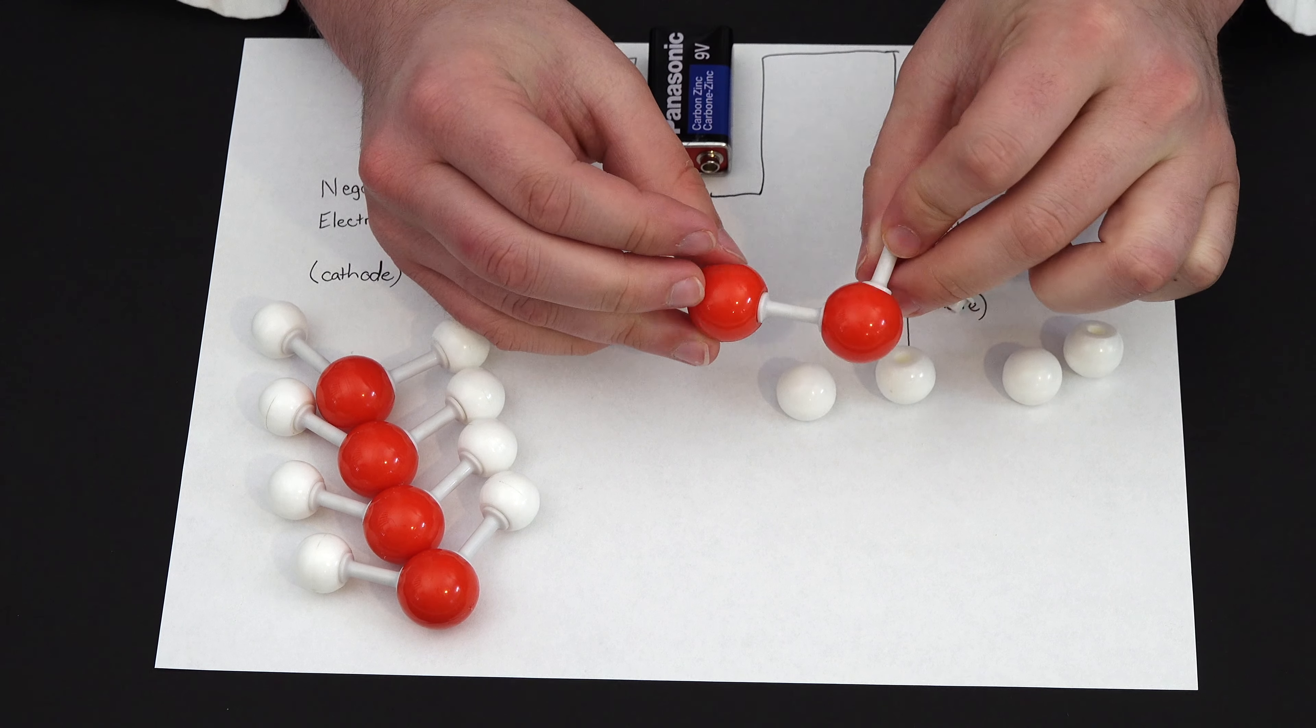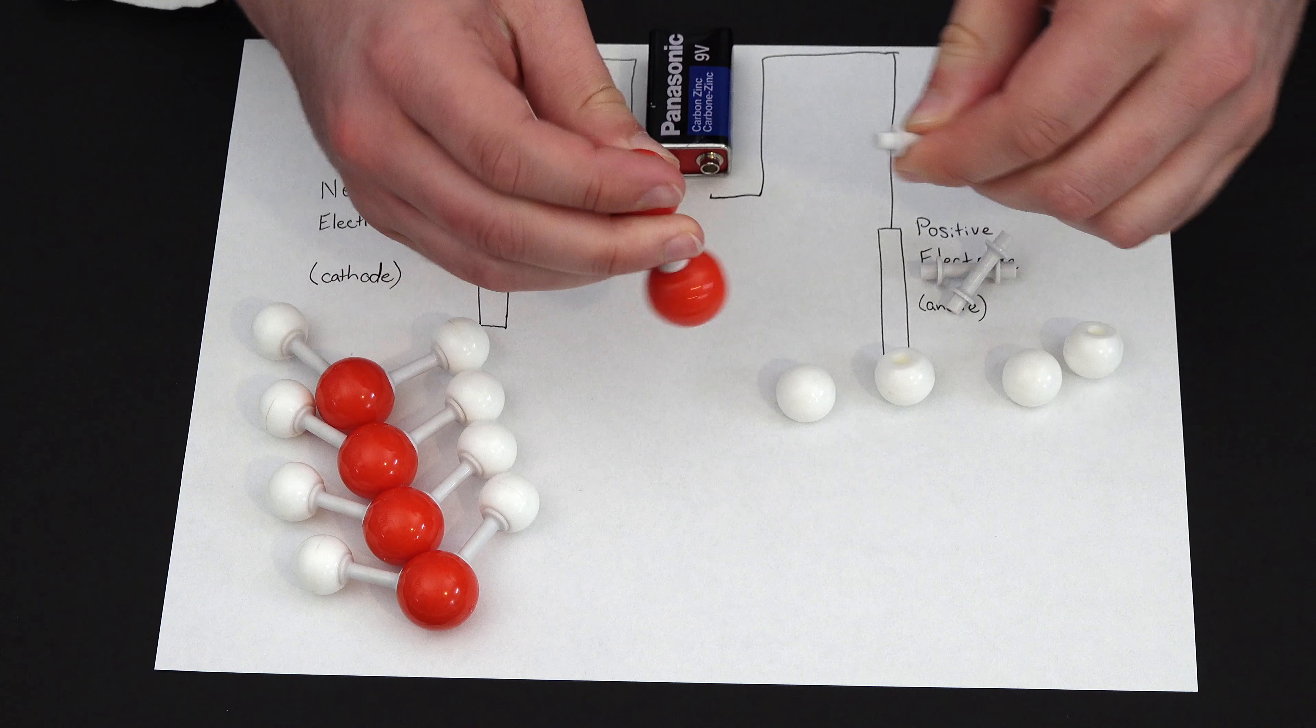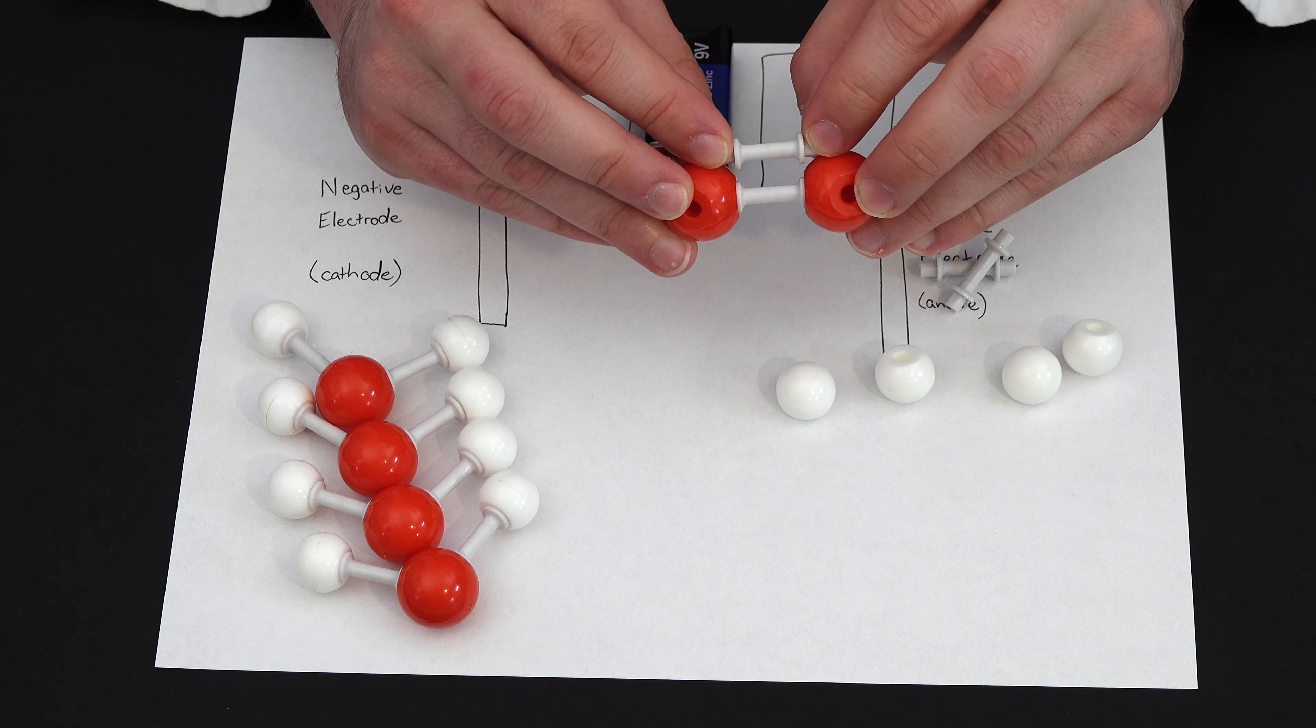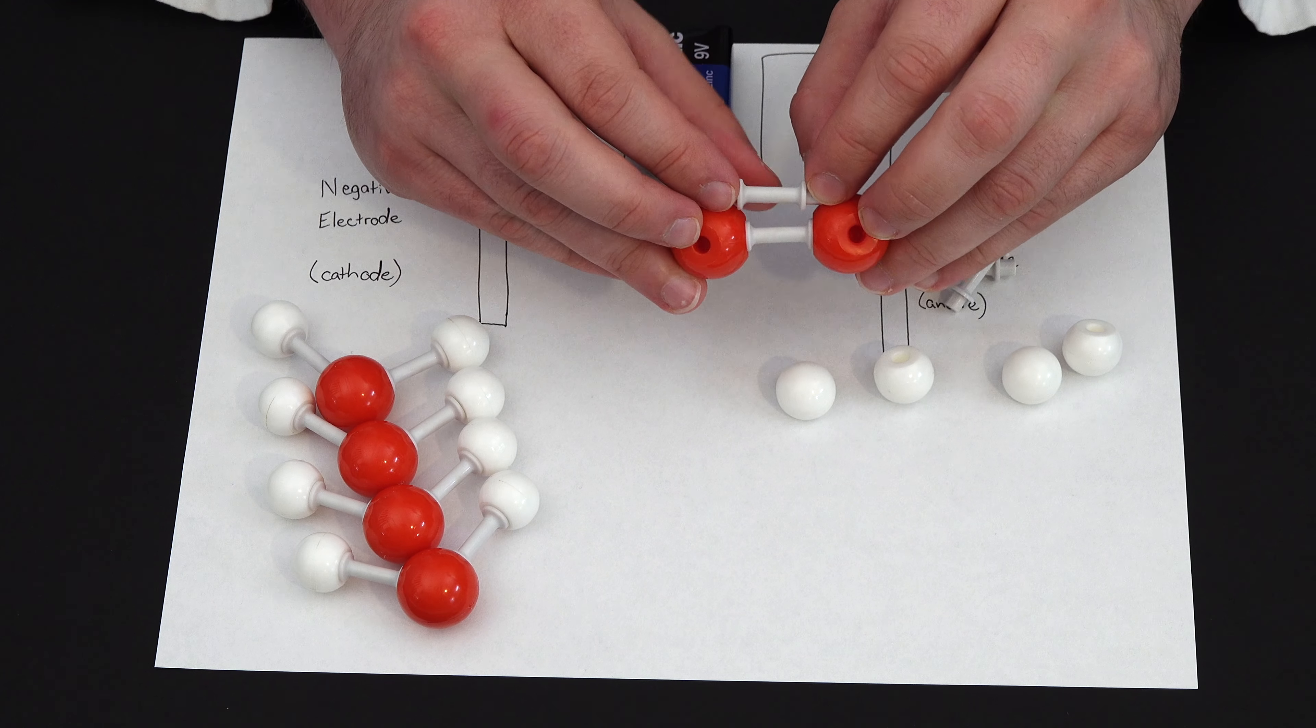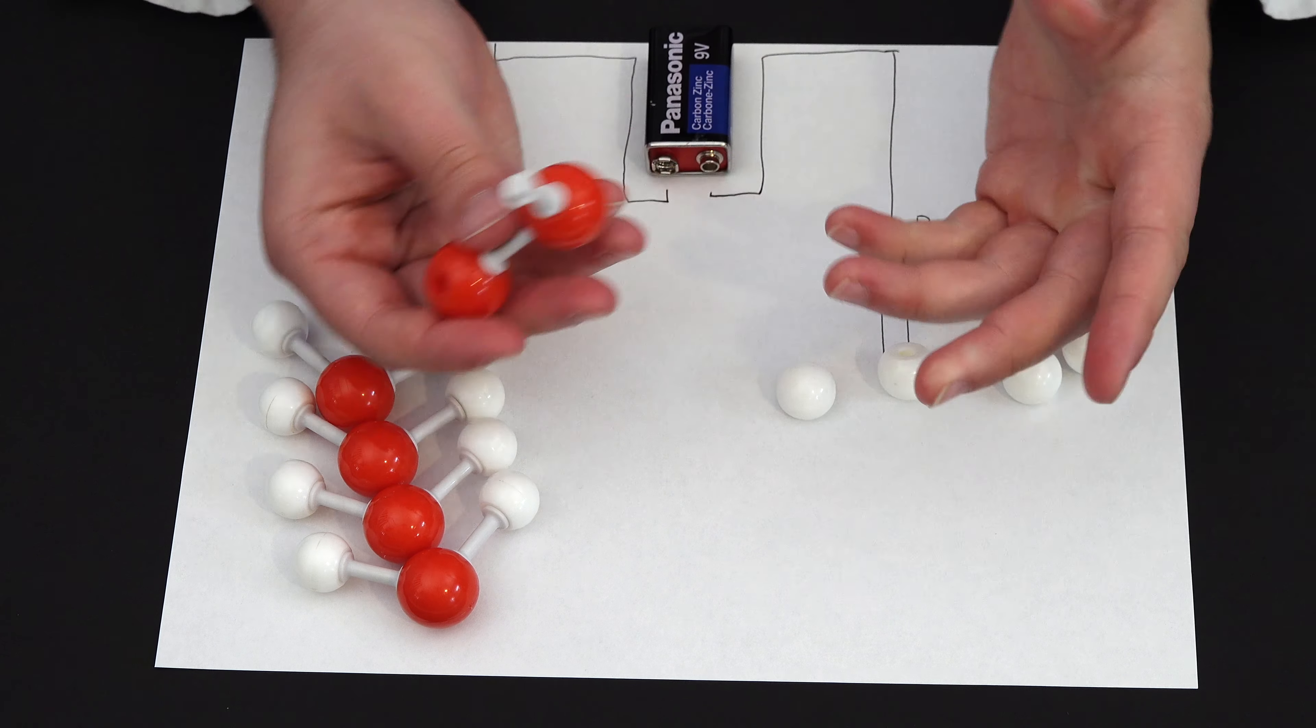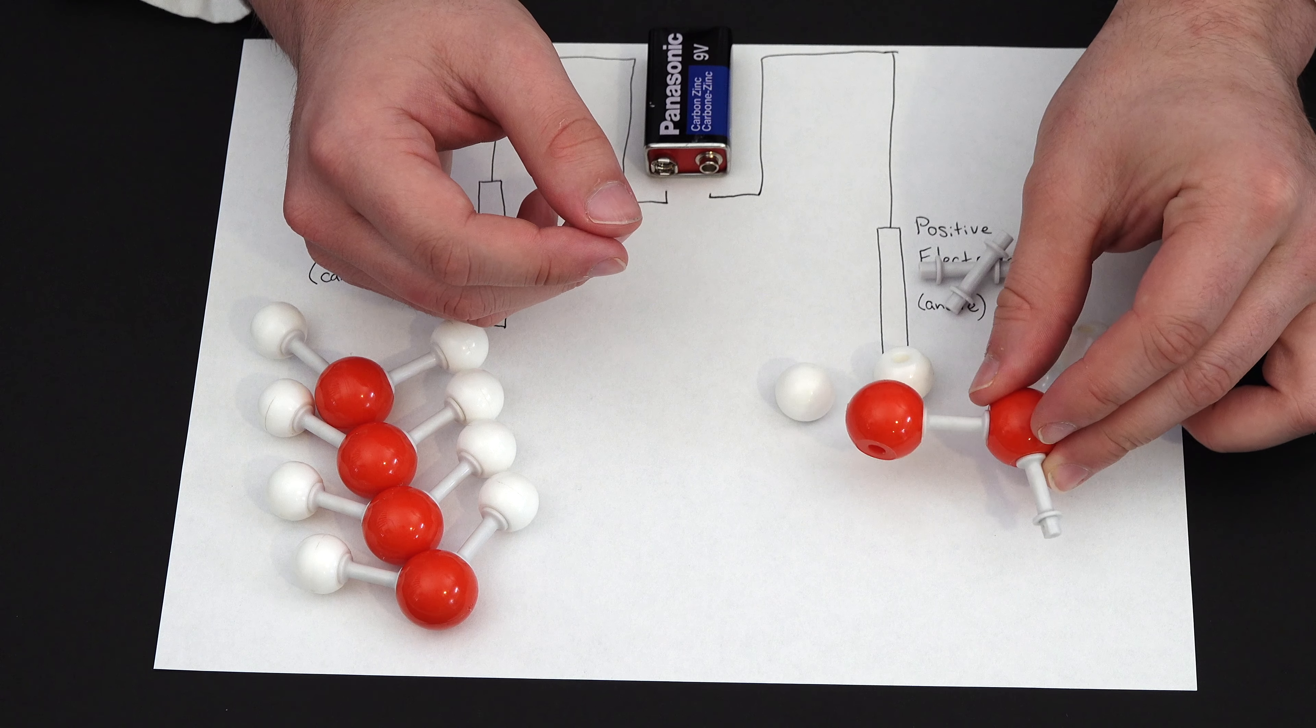So the oxygen, the two oxygen atoms from the water bond together, and it's supposed to be a double bond. Unfortunately my model kit doesn't really work too well, so we'll have to use our imagination here. So we have two oxygen atoms with a double bond between them. So we've made our oxygen, that just bubbles out of solution.